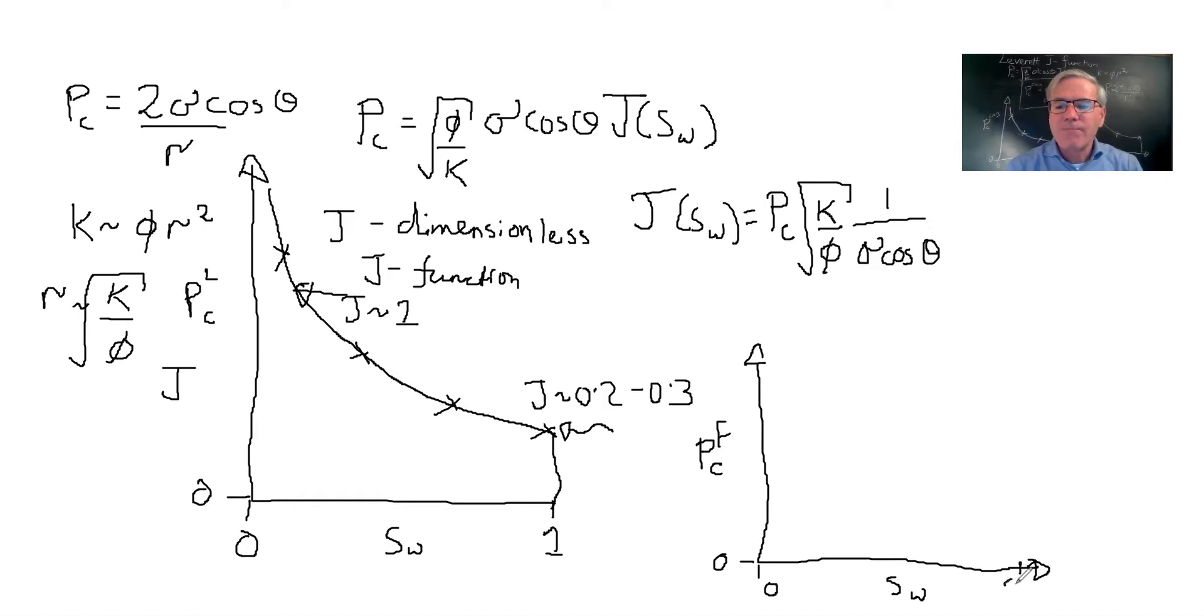We're taking a rock sample that we assume is reasonably representative of the field, but the fluid pairs, the porosity and permeability don't have to be exactly the same. So how can we scale the lab results to the field? The key assumption we make is we assume that the J function is the same.